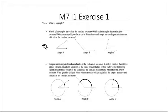So part B of exercise one asks us which of the angles below has the smallest measure and which of the angles has the largest measure? And what are you focusing on to determine which angle has the largest measure and which has the smallest measure?